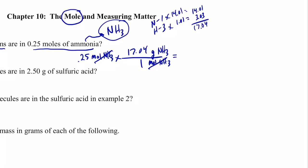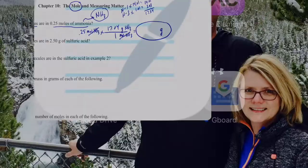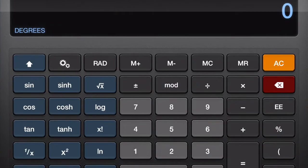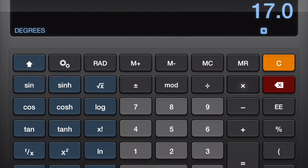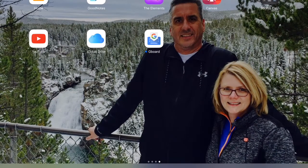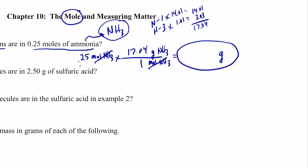Now we do the math: 0.25 times 17.04. Pulling out the calculator, that equals 4.26. But we're only allowed two sig figs, so we round that to 4.3 grams of ammonia.